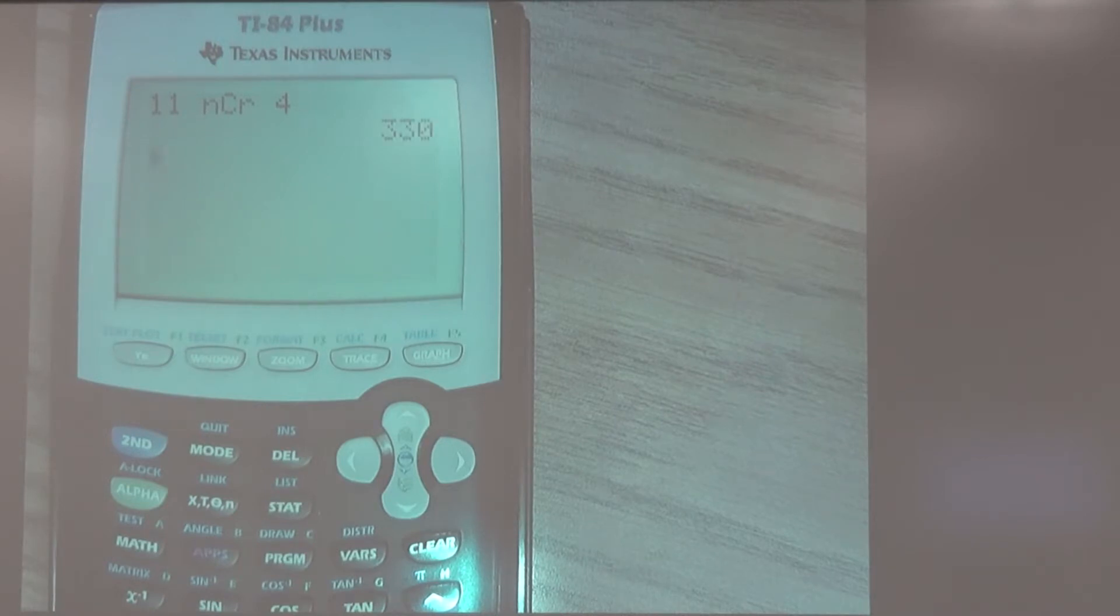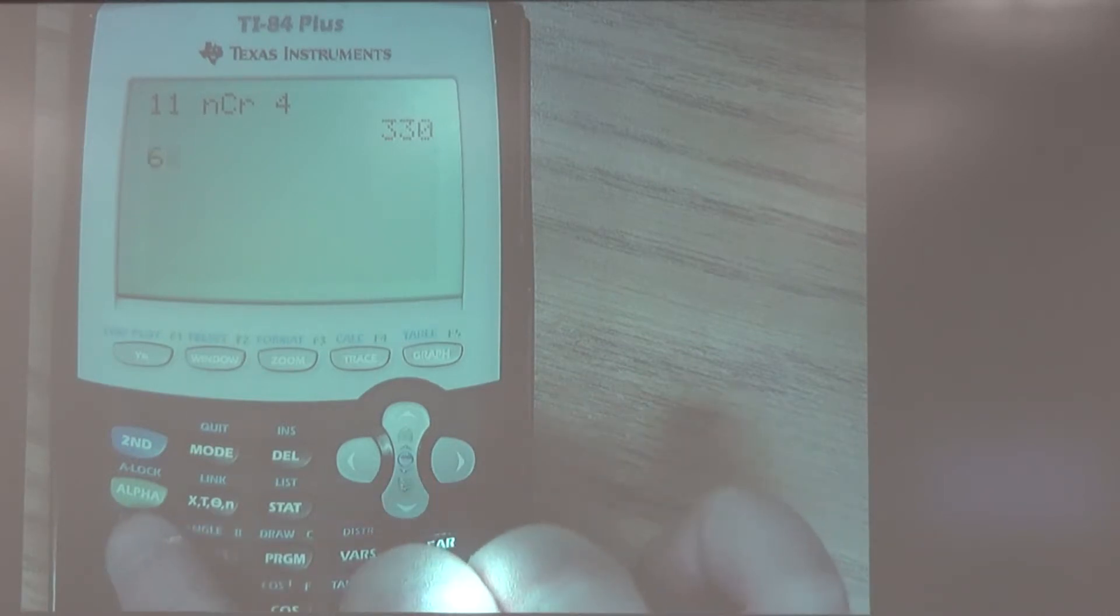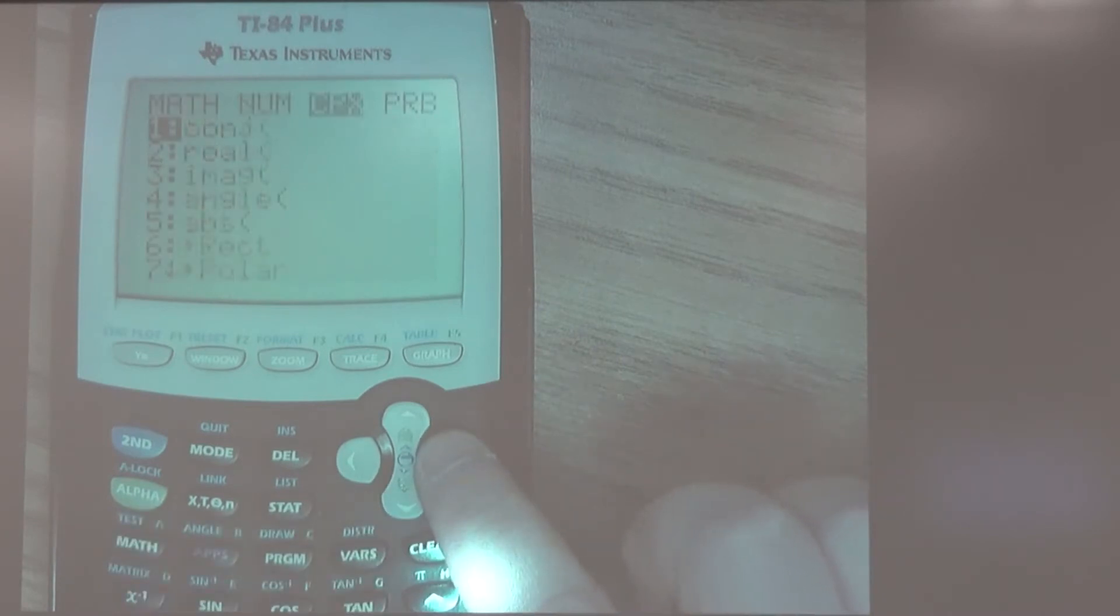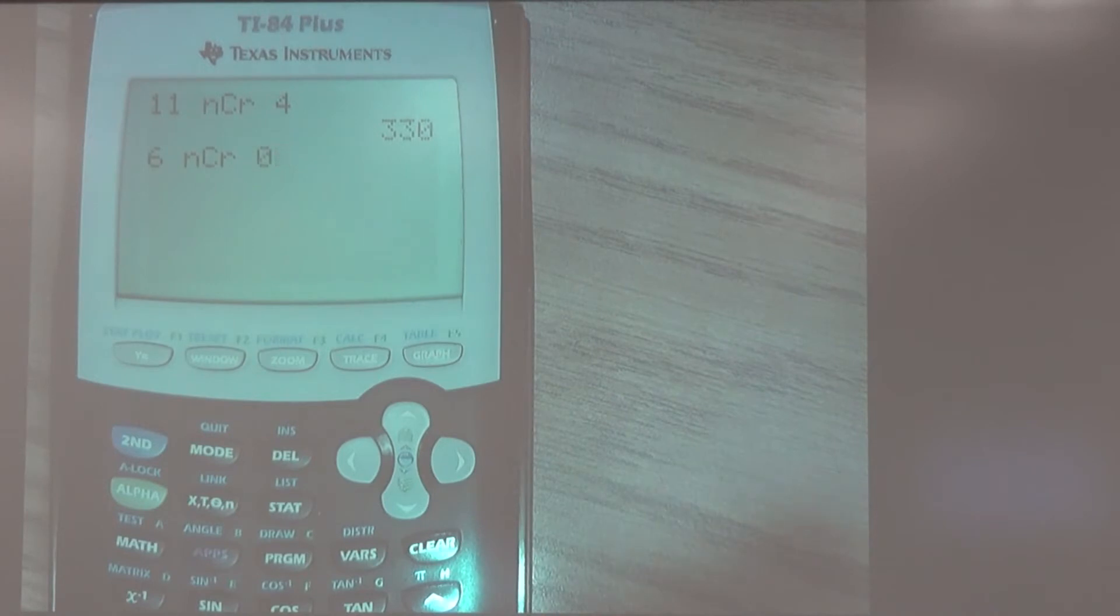So I can hit 3, so it's 11 n choose r, and we wanted 4. Enter. We get that answer to be 330. Remember the second one was those parentheses, 6 on top of 0, which means 6 choose 0.